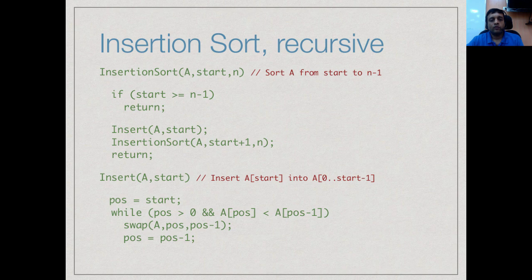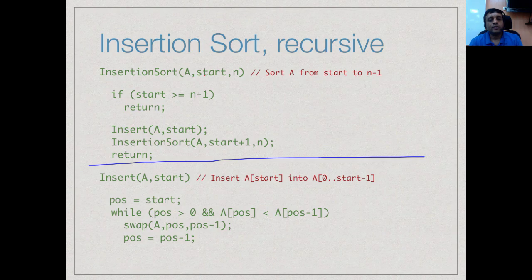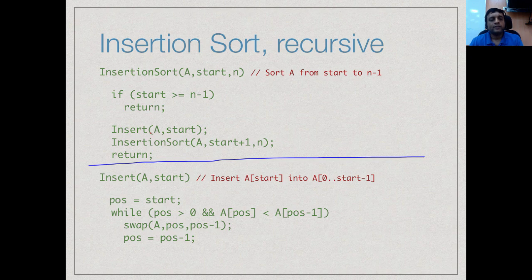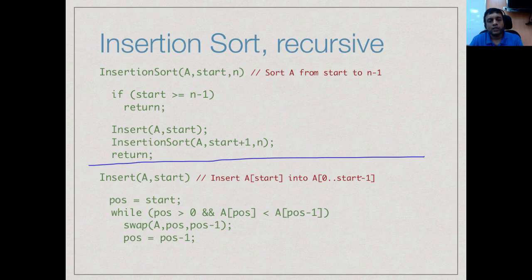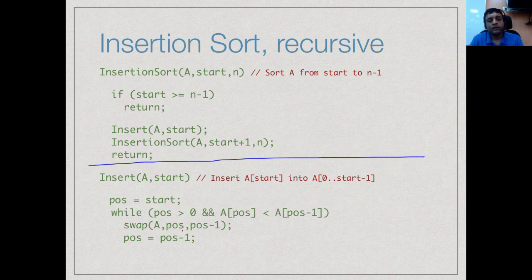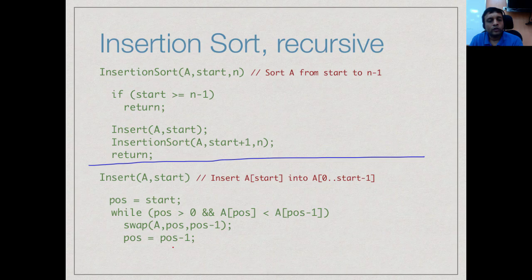Now we have a recursive formulation in two parts. We have insertion sort itself, which says sort this unsorted segment from start to n minus 1. If start is already at n minus 1, return. Otherwise, insert the value at position start into the rest of A, and then recursively sort the rest of the array from start plus 1 onwards. What does insert do? It starts at the position start and tries to insert it into the segment 0 to start minus 1. It walks backwards exactly as we had done it in the iterative thing. It finds the first position such that the value on the left is at least as small as the value we are currently looking for and stops there. This insert is basically what was in the body of the iterative loop, but instead of doing an outer loop, we do it recursively.